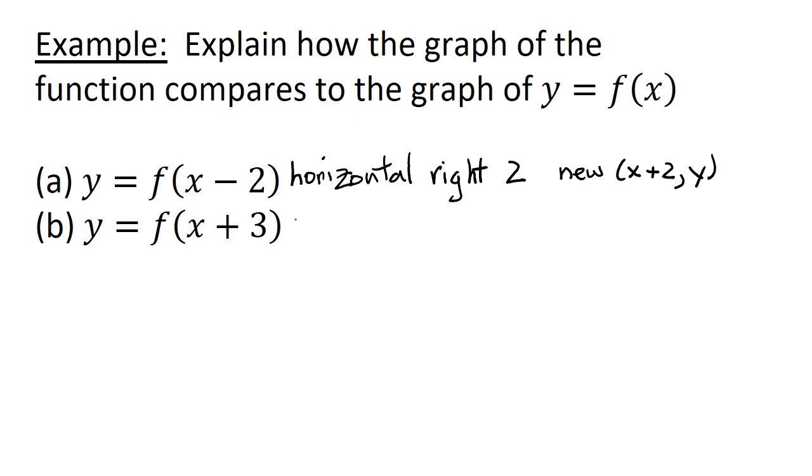And in the second case, I'm going to have a horizontal shift. Now what would I have to do to x plus 3 to get it back to x? It's going to be a horizontal shift to the left because I'm going to have to subtract 3, and the new point here would be (x - 3, y). I'm not making any changes to the y coordinate.